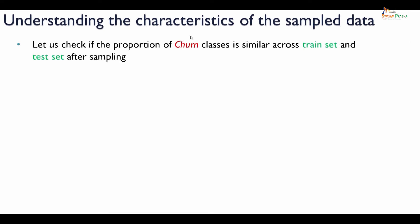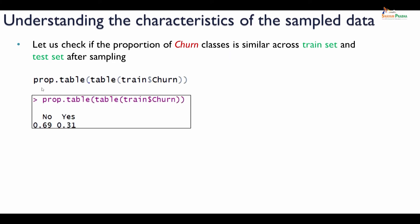Now we have sampled the data. How can we know if the proportion of churn classes is similar across train set and test set? We can check that using `prop.table`. The `table` function calculates frequencies under categories of churn. Using `prop.table` around that represents them as proportions. The proportion of churn classes in train shows about 31 percent churners and 69 percent non-churners.